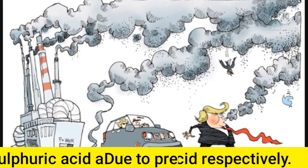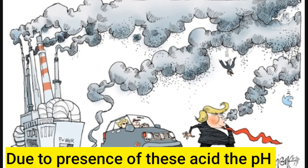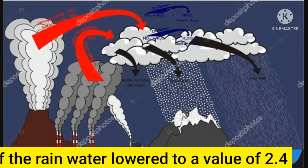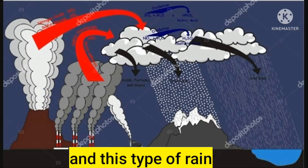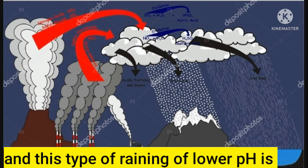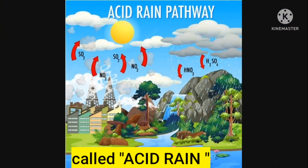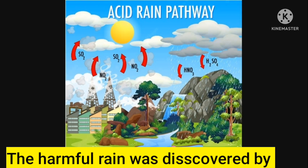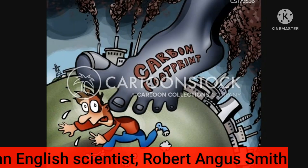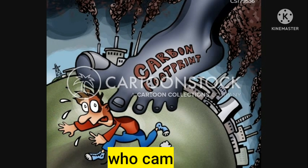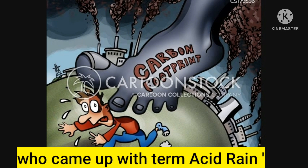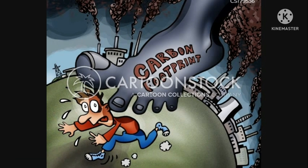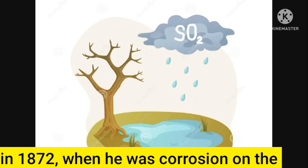the pH of the rain water is lowered to a value of 2.4, and this type of rain with lower pH is called acid rain. This harmful rain was discovered by an English scientist, Robert Angus Smith, who came up with the term acid rain in 1872, when he saw corrosion on the surface of buildings and plants because of rain.